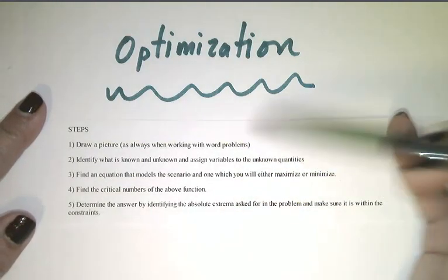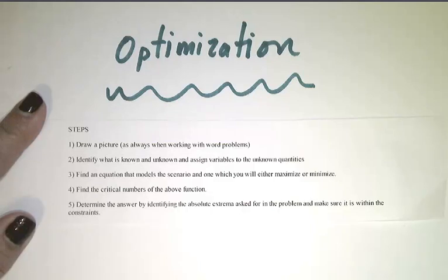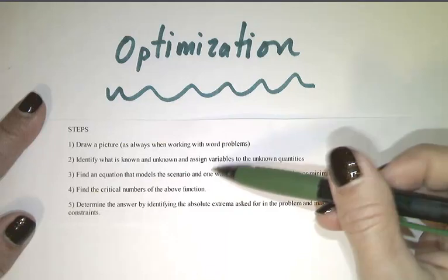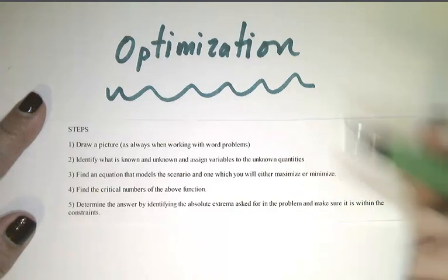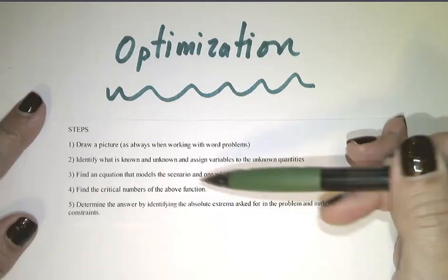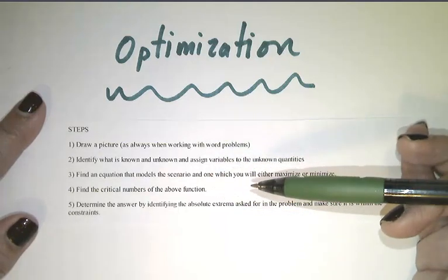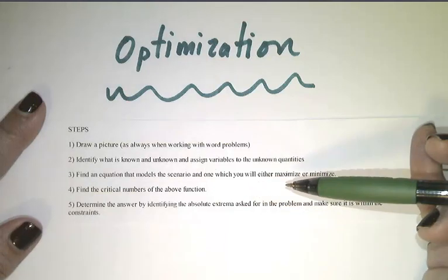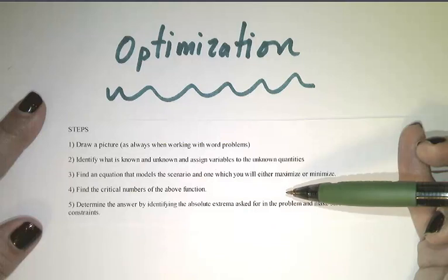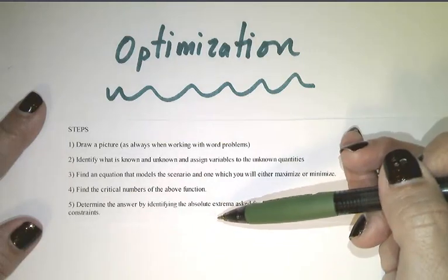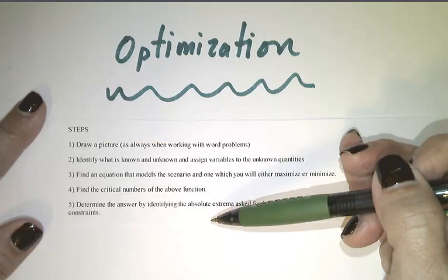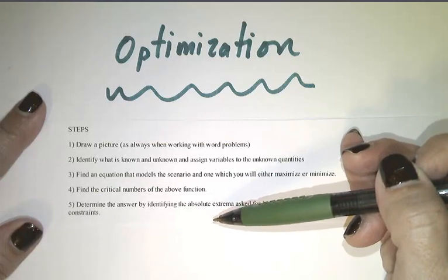So the first thing, as is always, is you should draw a picture. Identify what is known and unknown and assign variables to the unknown quantities. Find an equation, sometimes two, that models the scenario and the problem and one that you will be asked to maximize or minimize. Find the critical numbers of the function that you're going to maximize or minimize.